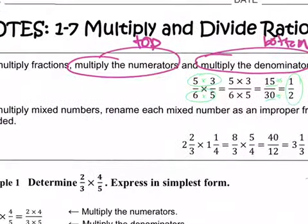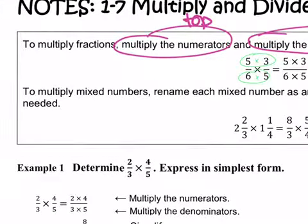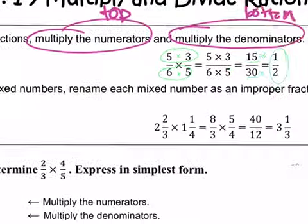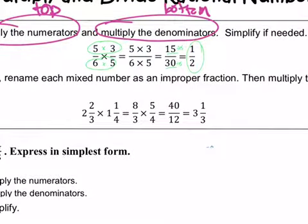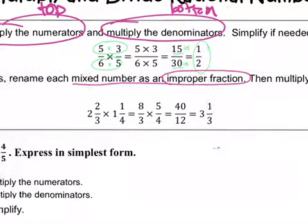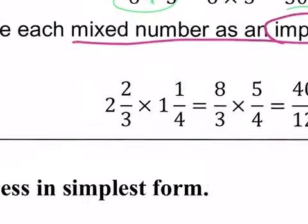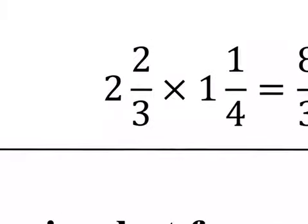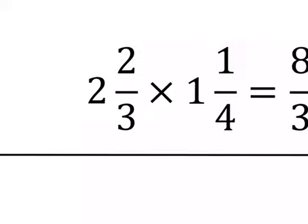Okay, if we're multiplying mixed numbers, we have to turn our mixed number into an improper fraction. So, do we remember how to do that? What we're going to do is we take that mixed number, so 2 and 2/3,